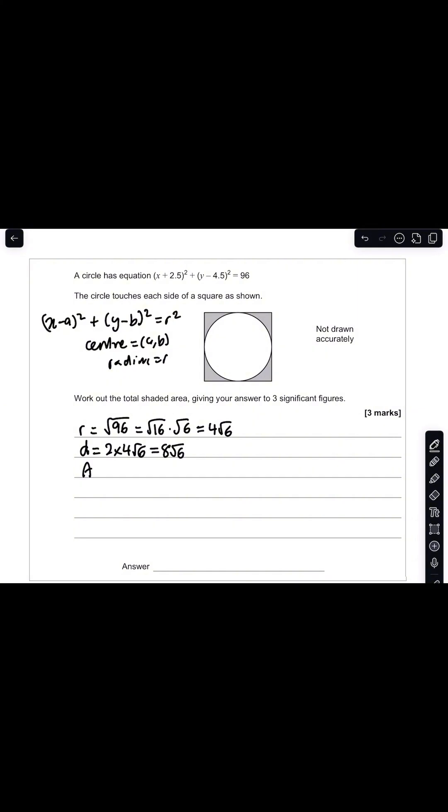We know the area of a square equals your length times your width. So in that case it's 8 root 6 times 8 root 6, which is the same as 64 times 6.